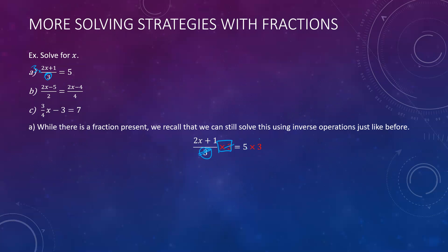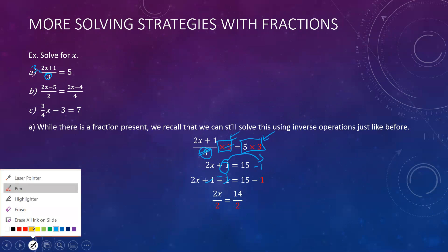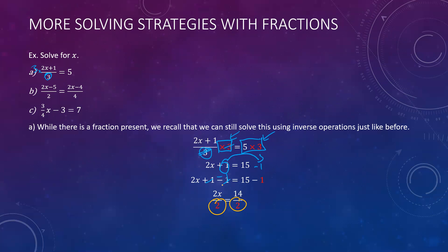While this might seem like you'd need to find a common denominator, I personally think because it's only one fraction and we have a whole expression divided by one number, it's quite easy to get rid of the denominator. We multiply by 3 on both sides to cancel out the 3, ending up with 2x plus 1 equals 5 times 3. We're left with 2x plus 1 equals 15. Then subtract 1 from both sides — 15 minus 1 is 14 — giving 2x equals 14. Finally, divide by 2, and we get x equals 7.